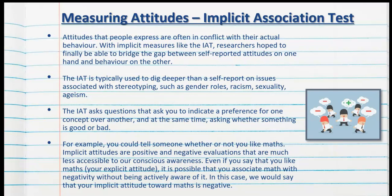The IAT asks questions that require you to indicate a preference for one concept over another in a very short amount of time, while also asking whether something is good or bad. Implicit attitudes are positive and negative evaluations that are much less accessible to our conscious awareness. For example, even if you say you like maths — your explicit attitude — you may associate maths with negativity without being actively aware of it, meaning your implicit attitude towards maths is negative, and that's what the IAT aims to reveal.